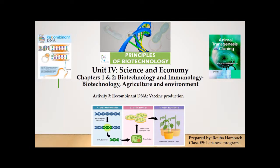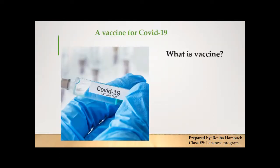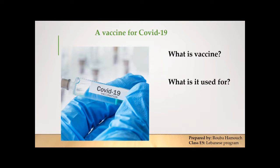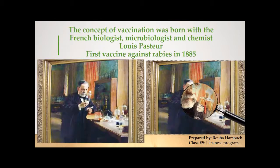Hello. We have arrived at activity 3: recombinant DNA vaccine production, in chapter 1, biotechnology and immunology of unit 4, science and economy. In this activity we are going to see what a vaccine is, what it is used for, and how it is produced.